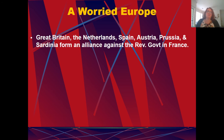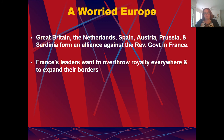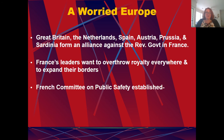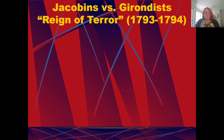Shockwaves were sent throughout all of Europe. Great Britain, the Netherlands, Spain, Austria, Prussia, and Sardinia form an alliance against the revolutionary government in France. France's leaders want to overthrow royalty everywhere and expand beyond their borders. The French Committee on Public Safety was established. European nations forced the French to surrender — and this is where we get to the Reign of Terror.